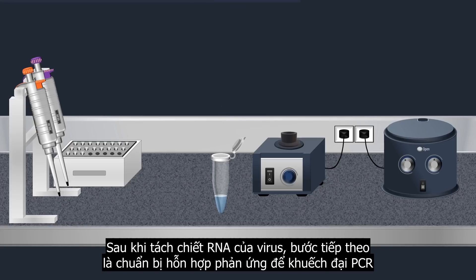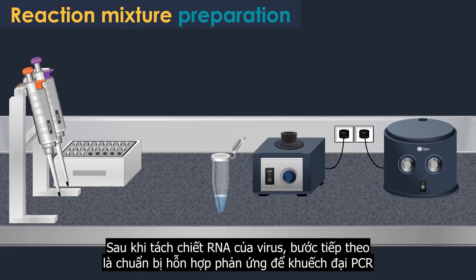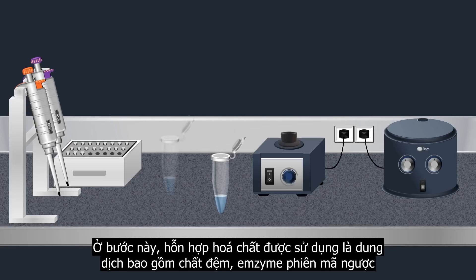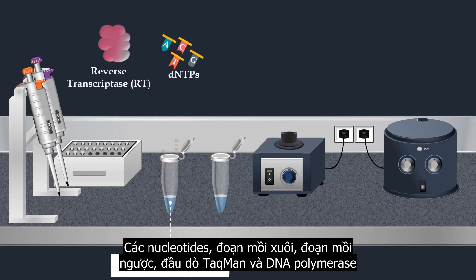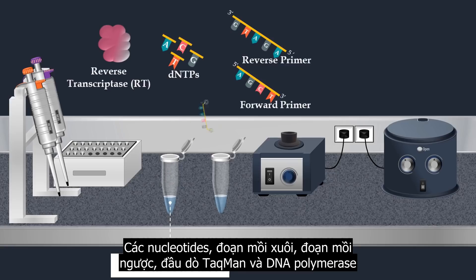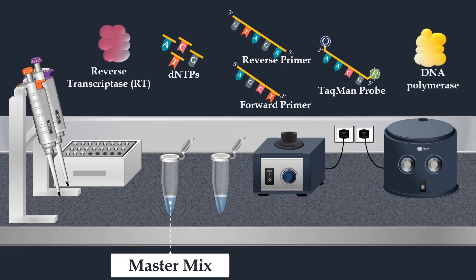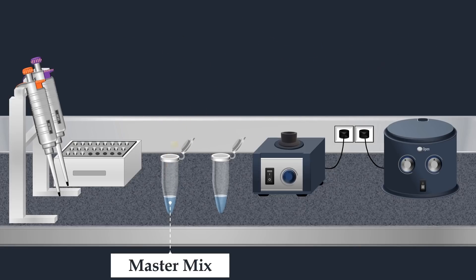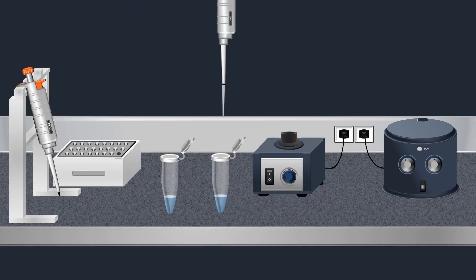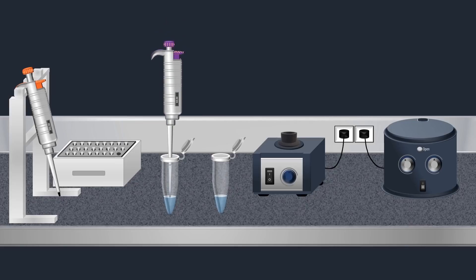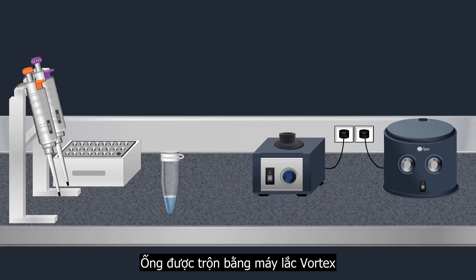After extraction of the viral RNA, the next step is the preparation of the reaction mixture for PCR amplification. In this step, a master mix is used, which is a pre-mixed concentrated solution that consists of buffer, reverse transcriptase enzyme, nucleotides, forward primer, reverse primer, Taqman probe, and DNA polymerase. Finally, to complete this reaction mixture, the RNA template is added. The tube is mixed by pulse vortexing.